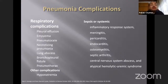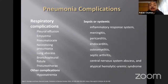Complications of pneumonia: respiratory complications include pleural effusion, empyema, pneumatoceles, necrotizing pneumonia, lung abscesses, bronchopleural fistula, and pneumothorax. Other complications include hyponatremia. Systemic or sepsis complications include systemic inflammatory response syndrome, meningitis, pericarditis, endocarditis, osteomyelitis, septic arthritis, CNS abscesses, and atypical hemolytic uremic syndrome.